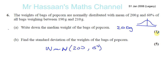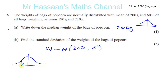Find the standard deviation of the weights of the bags of popcorn. Let's use the data we've got. It says 60% of all the bags weigh between 190 and 210. That's symmetrical — 190 is 10 below the mean of 200, and 210 is 10 above the mean. Altogether that area represents 60% of all the area. So that means the area from 200 to 210 is 30%, and from 190 to 200 is 30%.